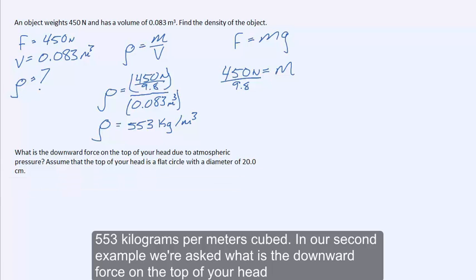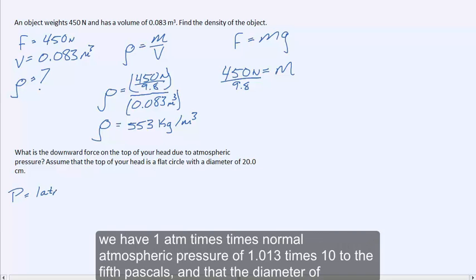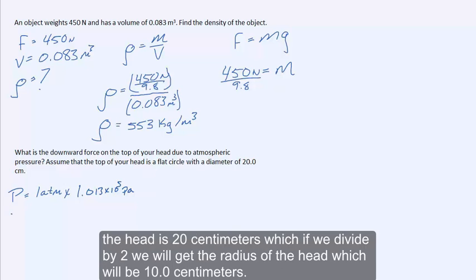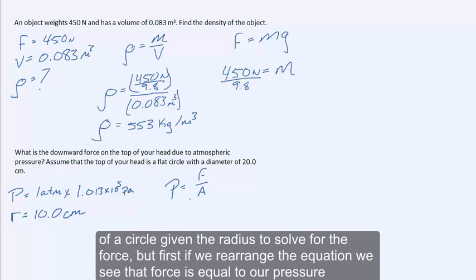In our second example, we're asked: what is the downward force on the top of the head due to atmospheric pressure? Assume the top of your head is a flat circle with a diameter of 20 centimeters. At atmospheric pressure, we have 1 atm, which is 1.013 × 10⁵ pascals. The diameter is 20 centimeters, so dividing by 2 gives a radius of 10.0 centimeters. Since pressure equals force over area, and we're given our pressure, we can calculate the area of the circle from the radius to solve for force.